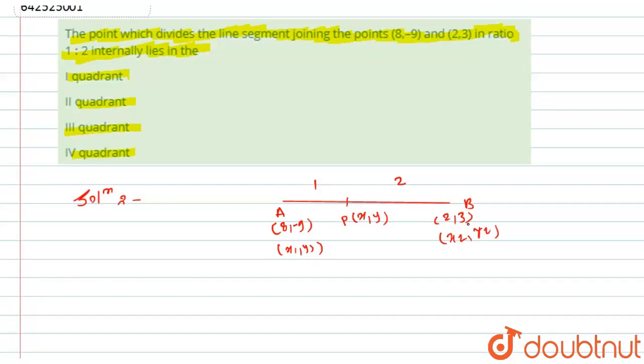The value of m will become 1 and value of n will become 2. So by using this section formula, I can find the coordinates of P.